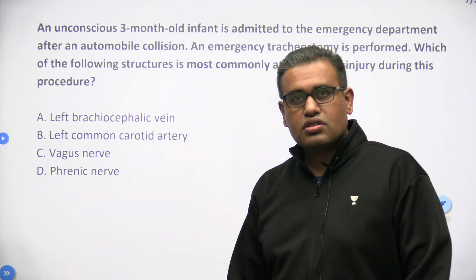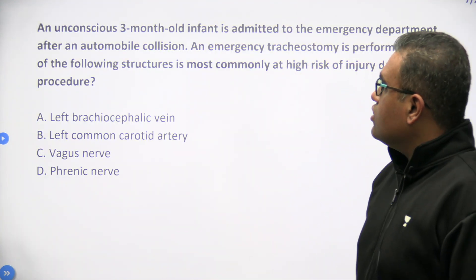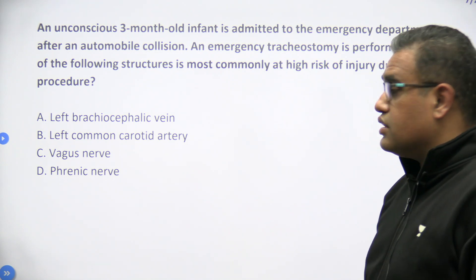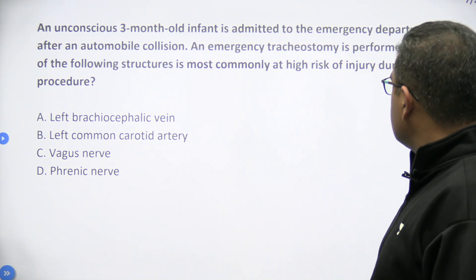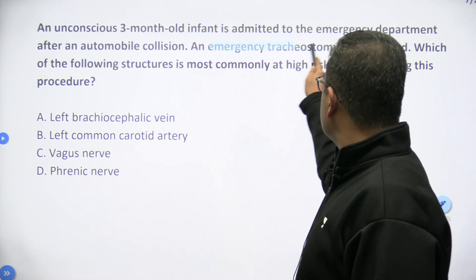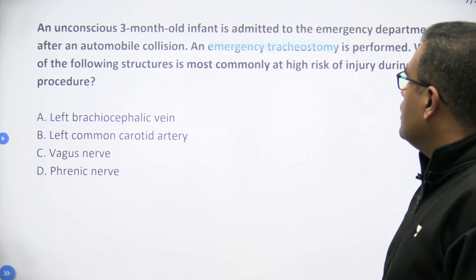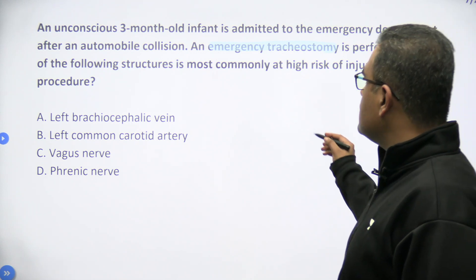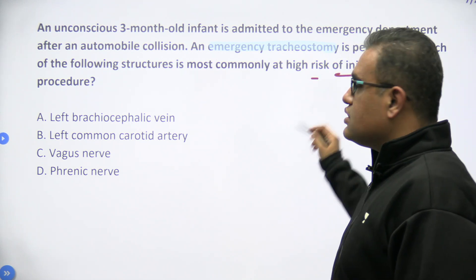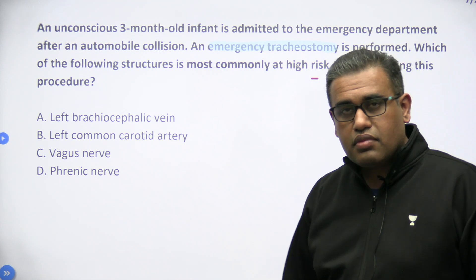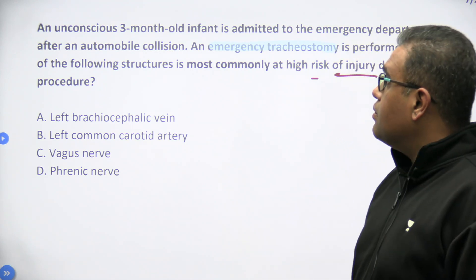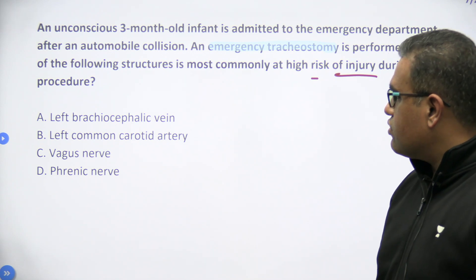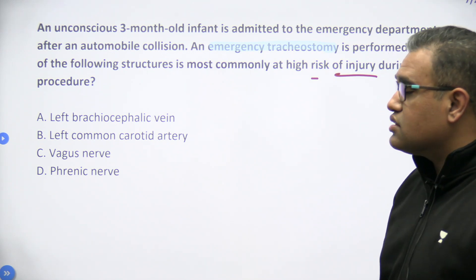Let us see some of the thorax MCQs. An unconscious 3-month-old infant is admitted to the emergency after an automobile collision. Emergency tracheostomy is performed. Which of the following structures is most commonly at high risk of injury during this procedure? Options are: left brachiocephalic vein, left common carotid artery, vagus nerve, and phrenic nerve.